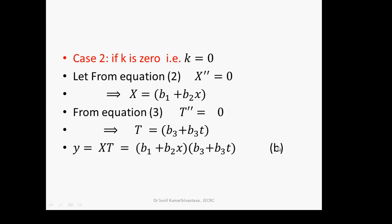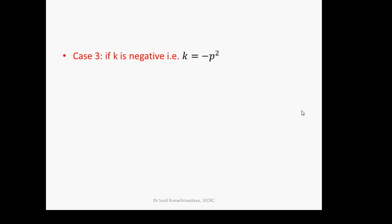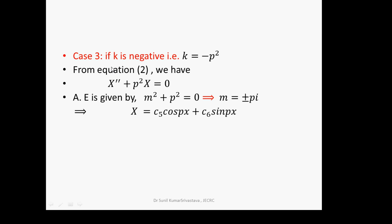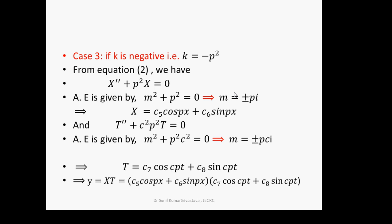Case 3: k is negative. Let k = −p². Then X'' + p²X = 0. The auxiliary equation gives m = ±pi, so X = c₅cos(px) + c₆sin(px). For T: T'' + c²p²T = 0, giving m = ±cpi, so T = c₇cos(cpt) + c₈sin(cpt). The solution when k is negative is y = (c₅cos(px) + c₆sin(px))(c₇cos(cpt) + c₈sin(cpt)).